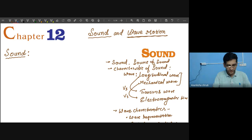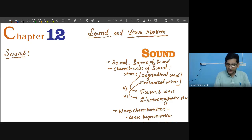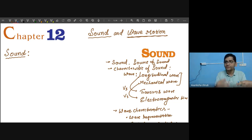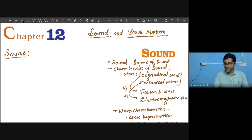Good evening students. Today we are going to start a new chapter of physics called Sound, also called Sound and Wave Motion. We have to learn about sound and one of its important characteristics is that it travels in the form of a wave. That's why in this chapter we will learn about the characteristics of waves in addition to the definition of sound, and also about types of waves.